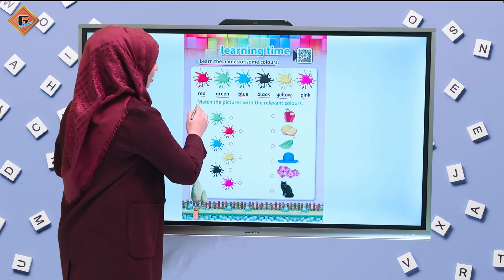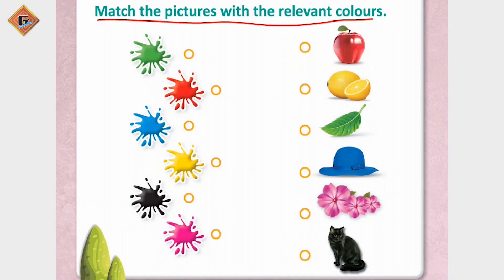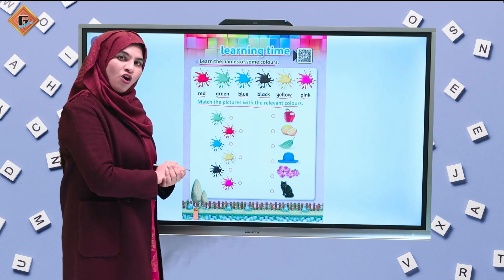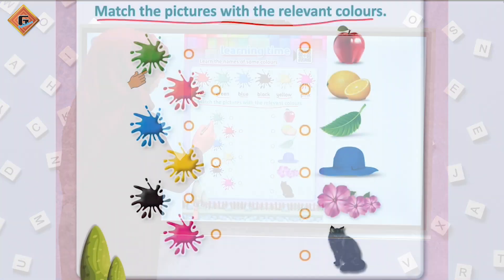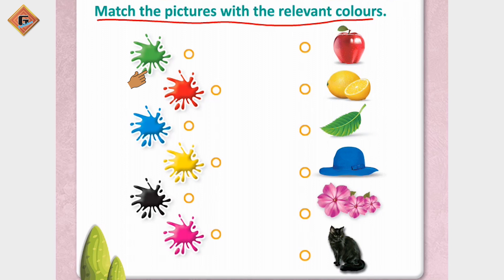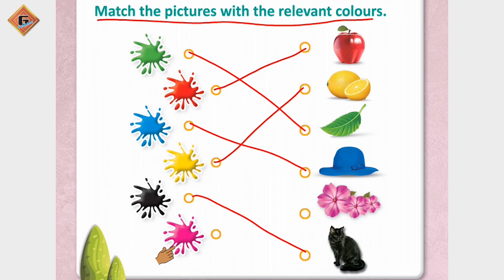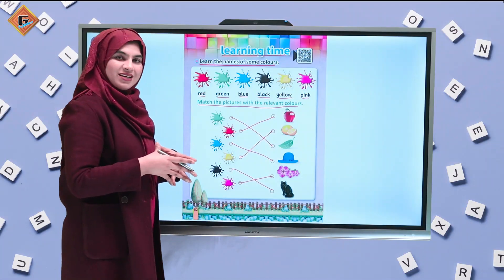Now, match the pictures with the relevant colors. We have some colors and some objects given — we have to match the colors with their objects. Sabse pahle green color hai — green leaf. Then red color — we have a red apple. Then blue — blue hat. Then yellow — we have a lemon. Then black — a black cat. And last, pink — we have a pink flower. Is tarha se aapne is matching ko complete karna hai.